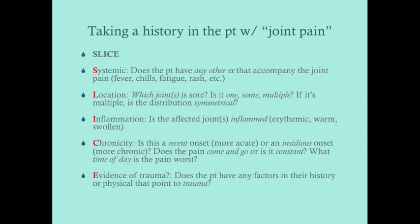To take a good history in a patient with joint pain, use the SLICE framework. S stands for Systemic — does the patient have any other symptoms accompanying the joint pain? Fever, chills, or rash? A rash might suggest vasculitis like Wegener's granulomatosis or Churg-Strauss disease. Fever might point to gout, rheumatoid arthritis, or an infectious cause. Chills are more suggestive of infection.